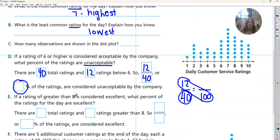If a rating greater than eight is considered excellent, what percent are excellent? So again, how many total were there? We already know that there were 40 total.